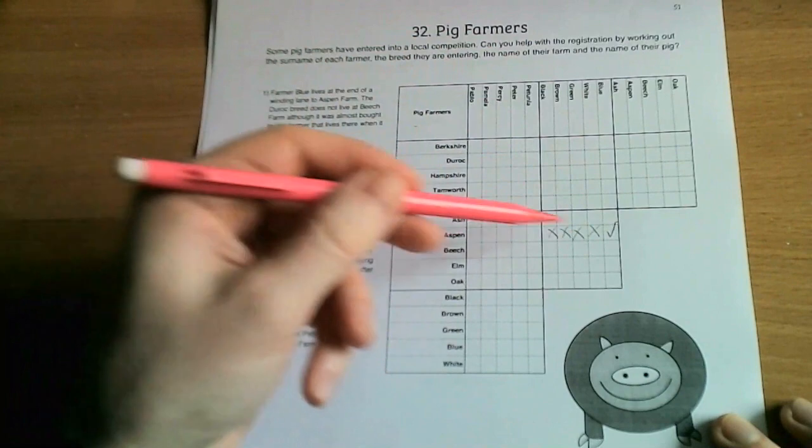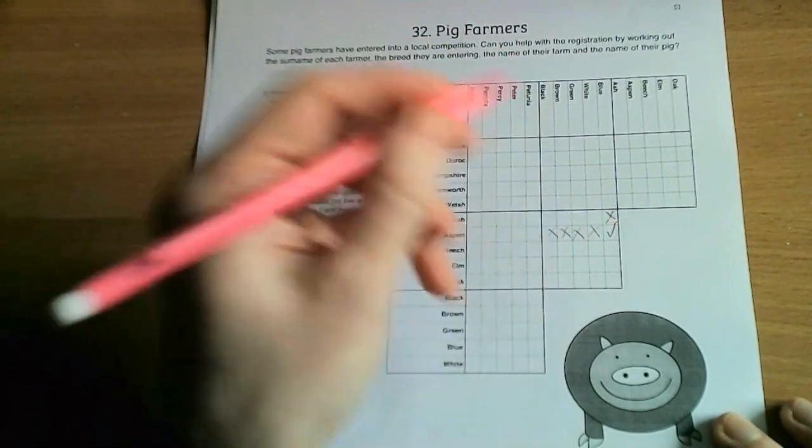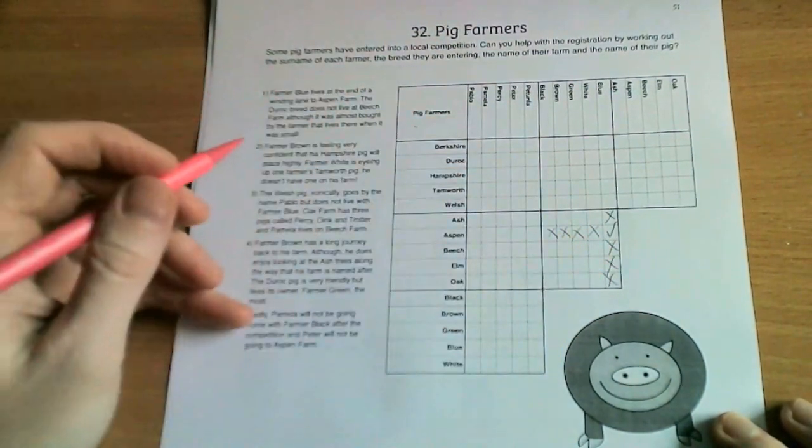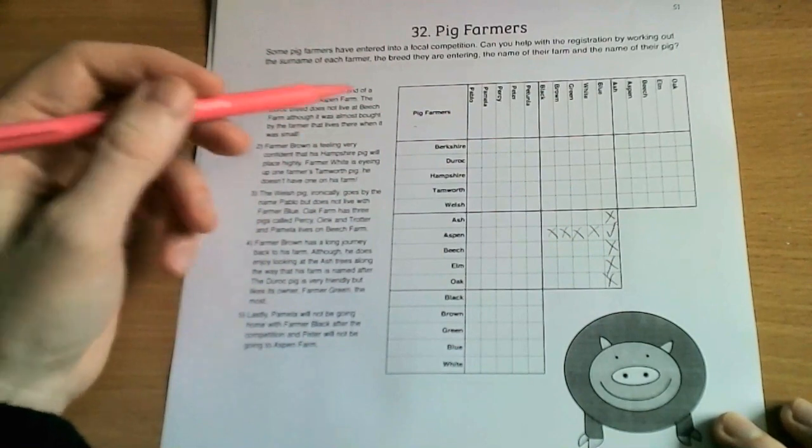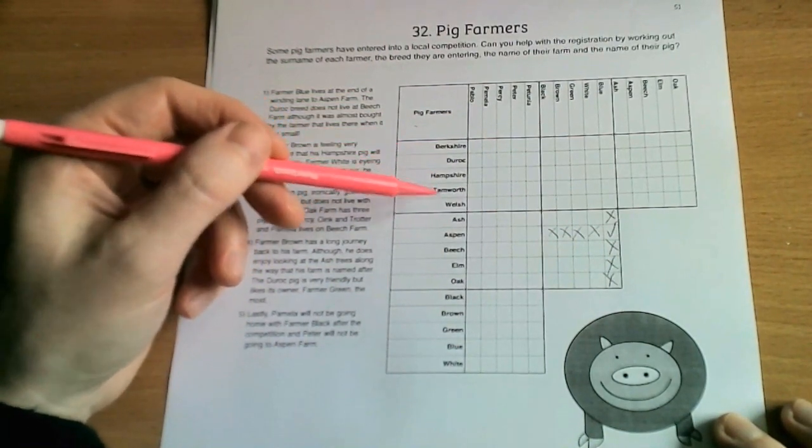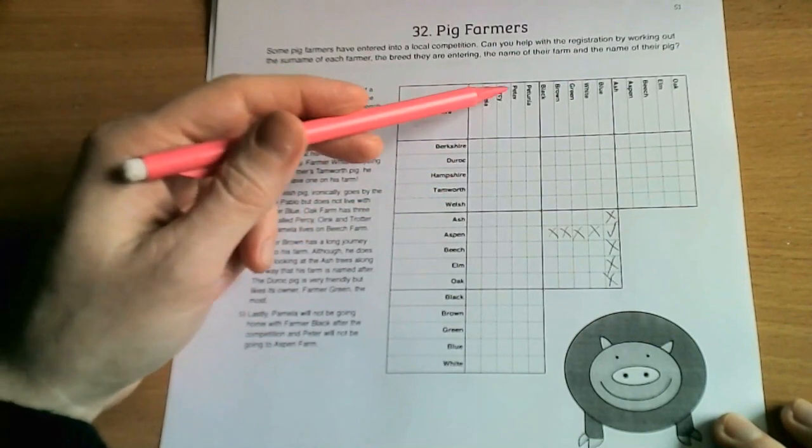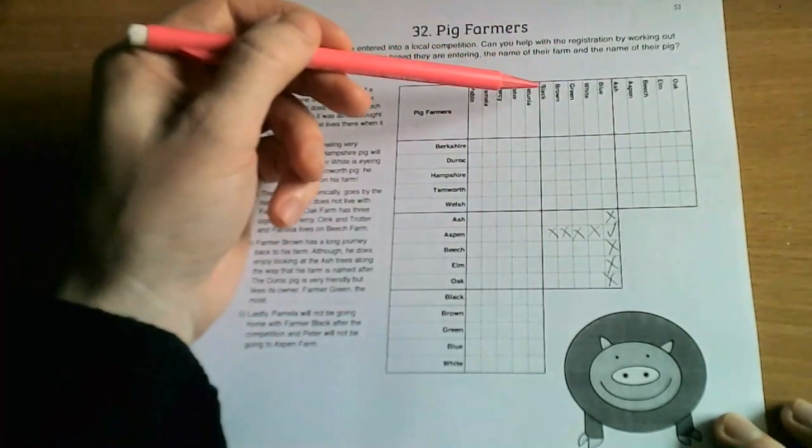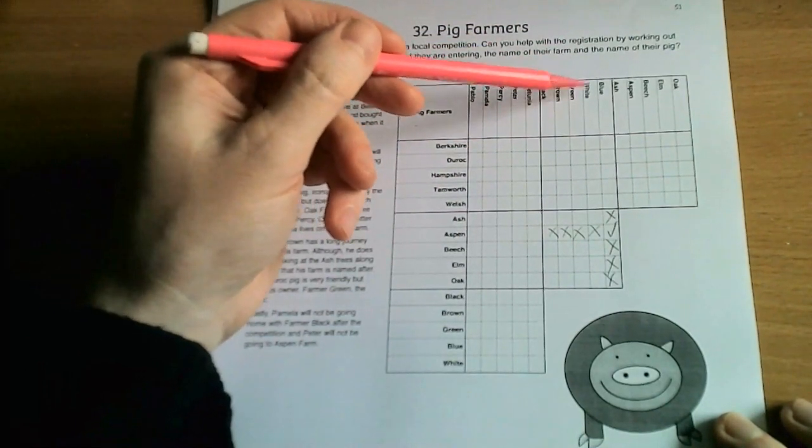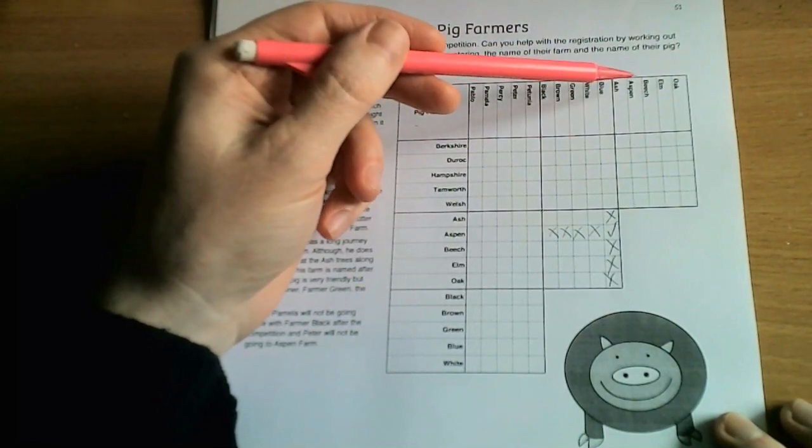Farmer Blue doesn't live at Ash, Beech, Elm, or Oak Farm. And I should say that we're looking for a series of five pig breeds here: Berkshire, Duroc, Hampshire, Tamworth, and Welsh. We're looking to work out the pig names from Pablo, Pamela, Percy, Peter, and Petunia, the name of the farmer, and the name of the farm that the pig is based at: Ash, Aspen, Beech, Elm, and Oak.